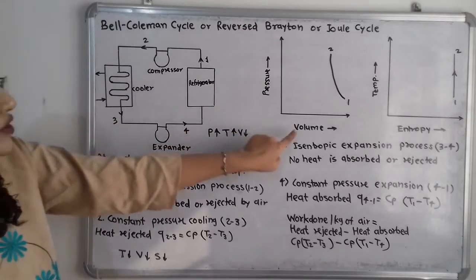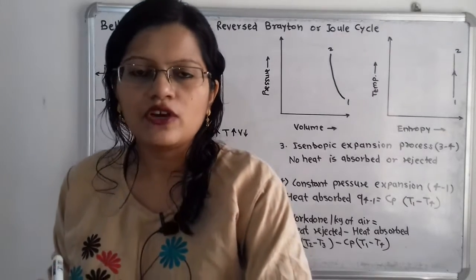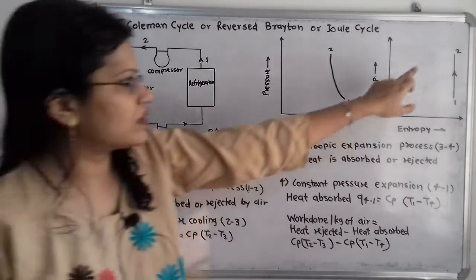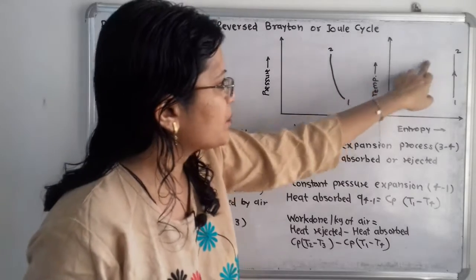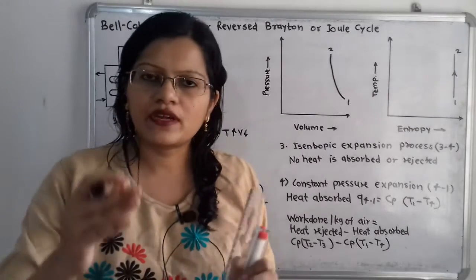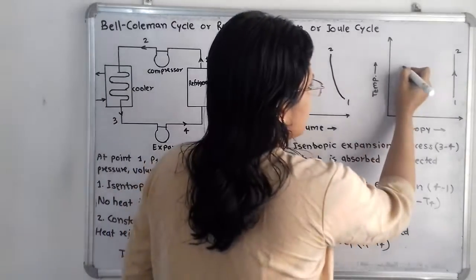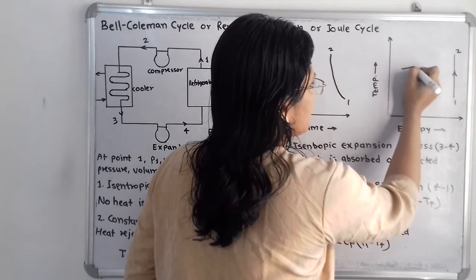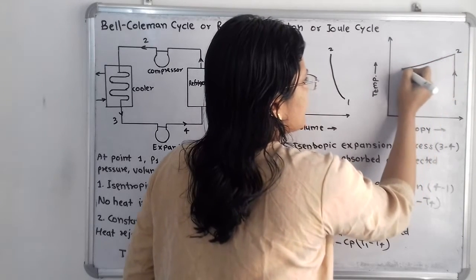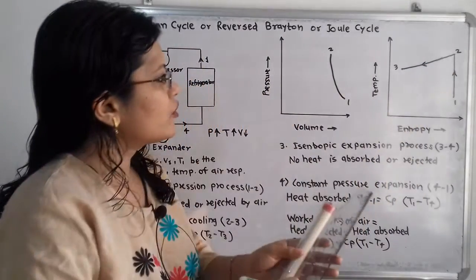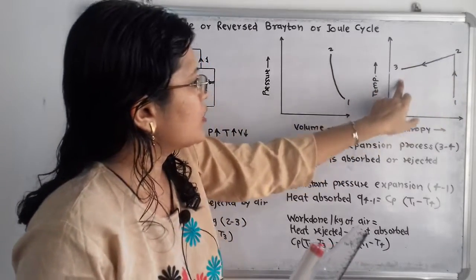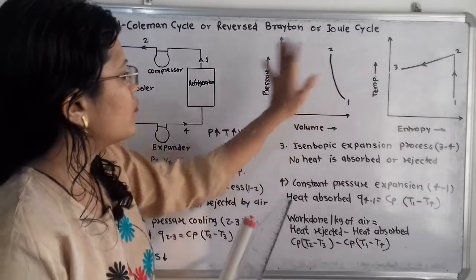We have to show this in the pressure-volume and temperature-entropy diagrams. For the temperature-entropy diagram, point 3 should be at a lower temperature than point 2, and entropy is also getting decreased. Point 3 has lower temperature and lower entropy than point 2.